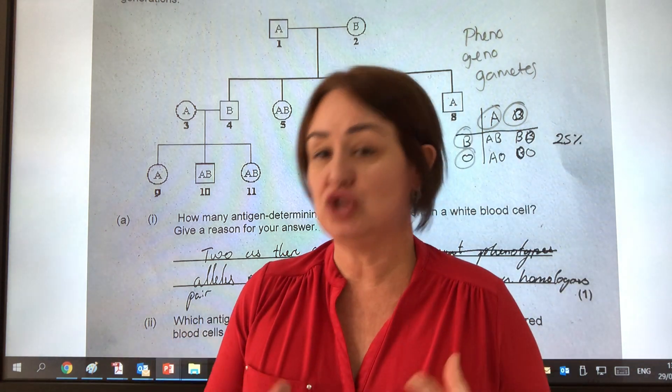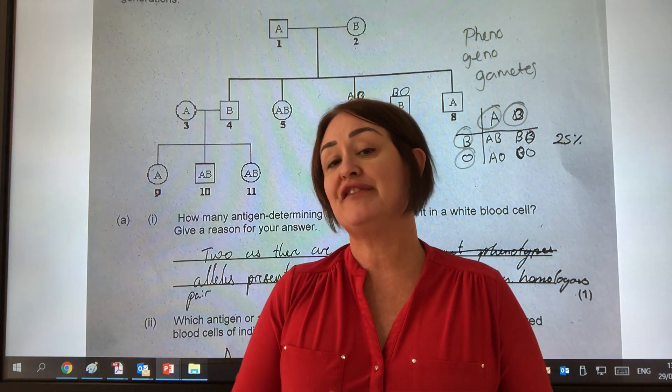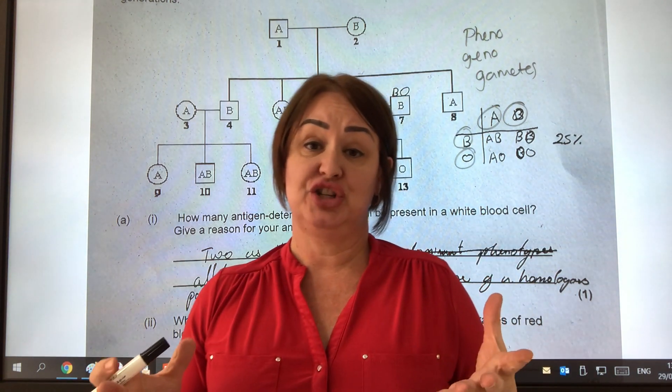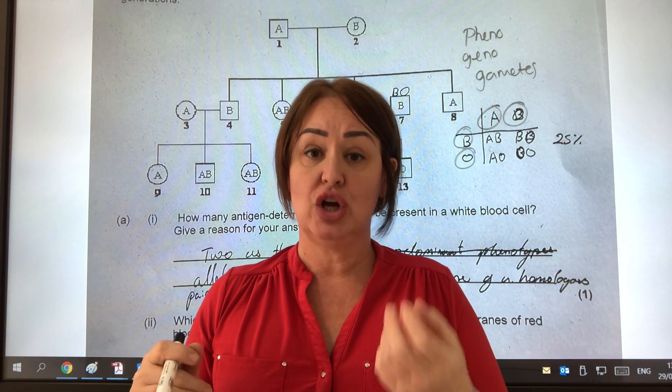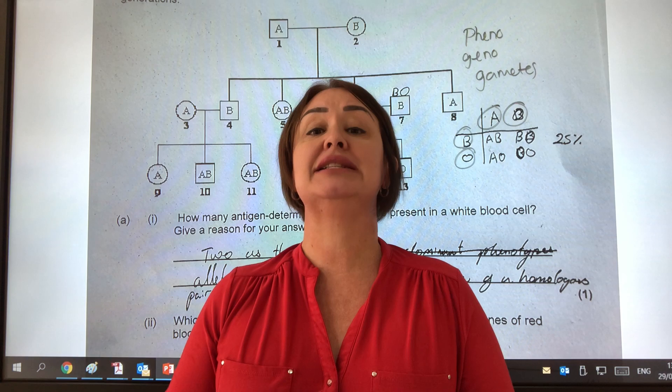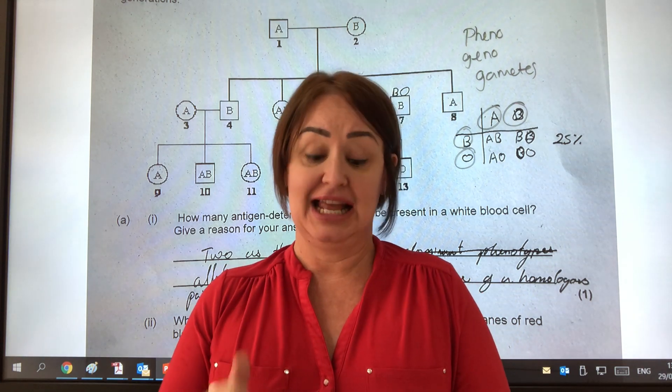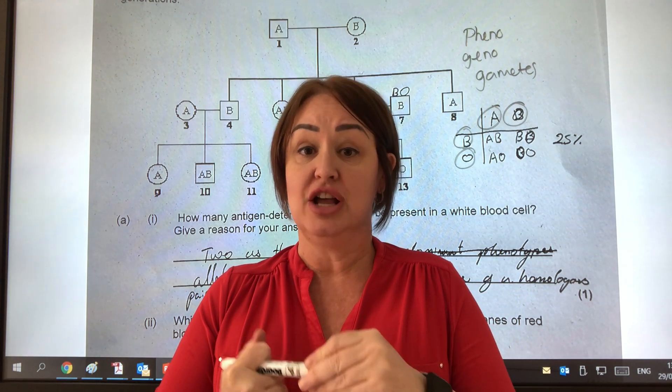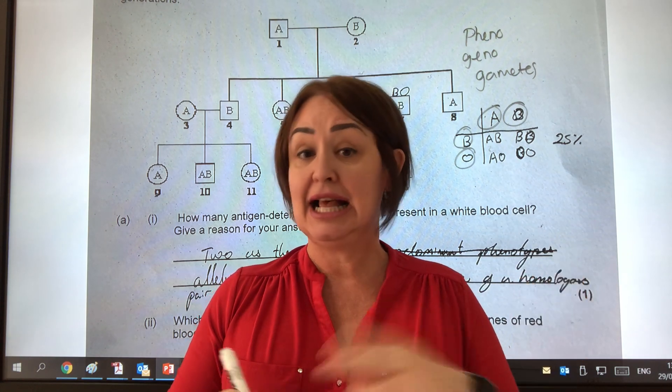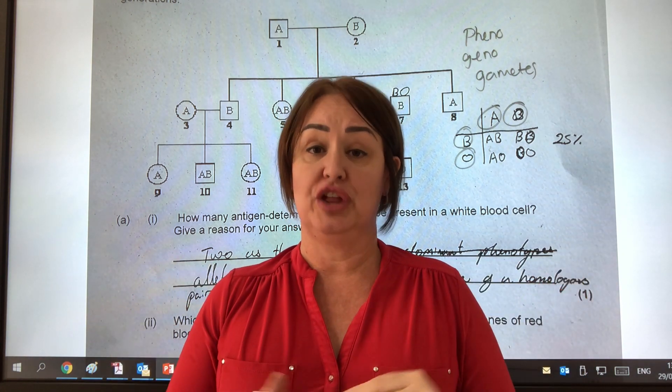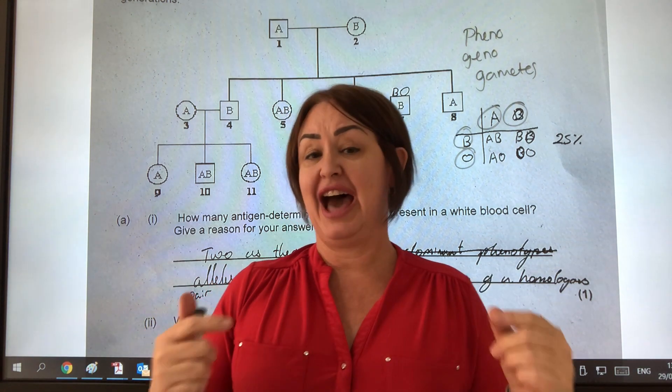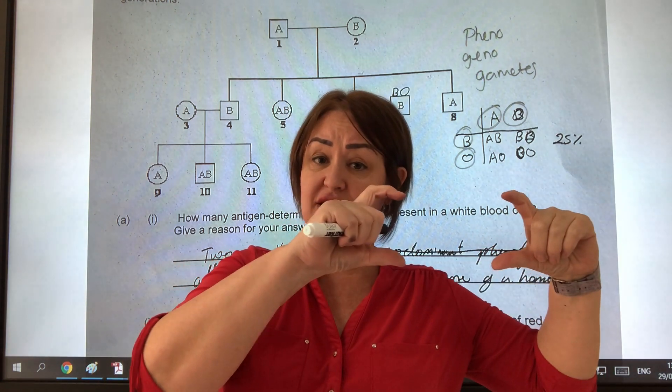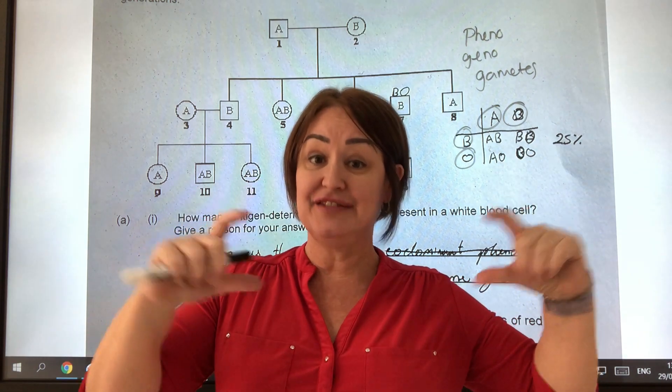So that is co-dominance. And the main thing I want you to walk away with is the idea, when you get an exam question, as soon as you see those little superscript letters, you know you're looking at a co-dominance question. Co-dominance is monohybrid. And although we have examples where co-dominance is just two alleles, like the colors for the petals in the flower, we also have examples that are more complicated like blood group that show you've got co-dominance alongside recessive as well.